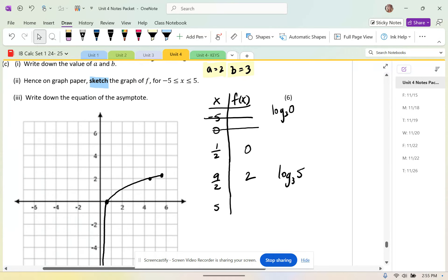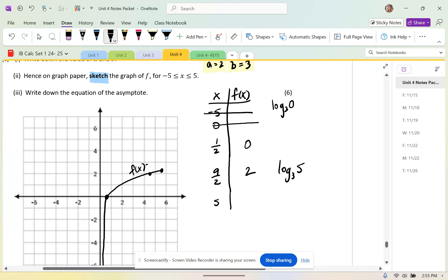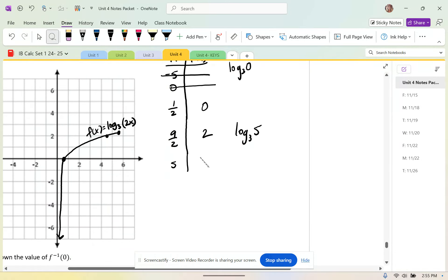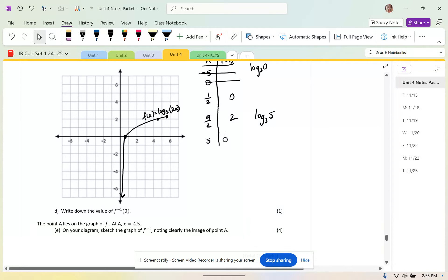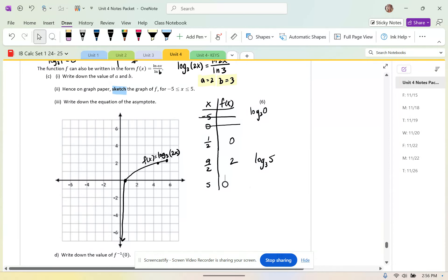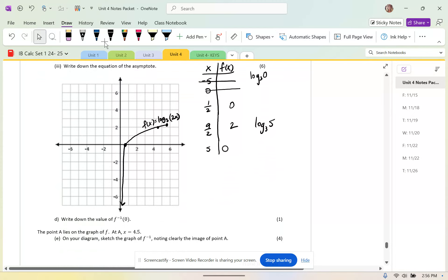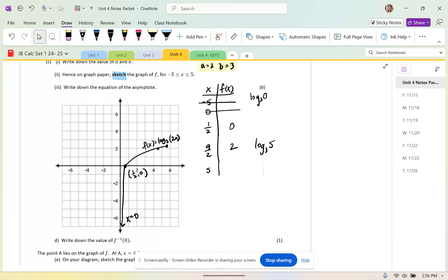What is this called? F. Write down the value of the equation of the asymptote. Oh, x equals 0. And then my y and my x-intercept is 1 half 0. My sketch is complete.